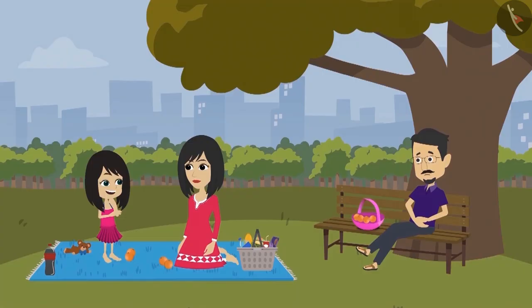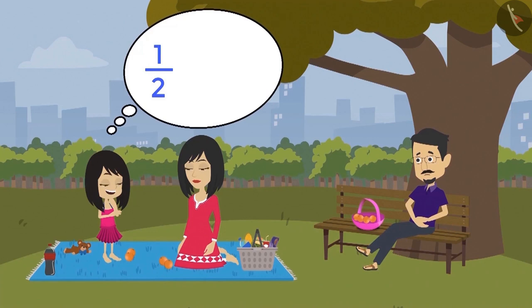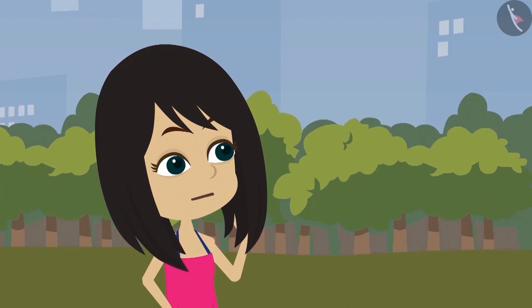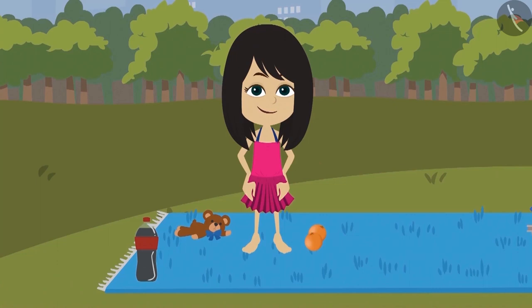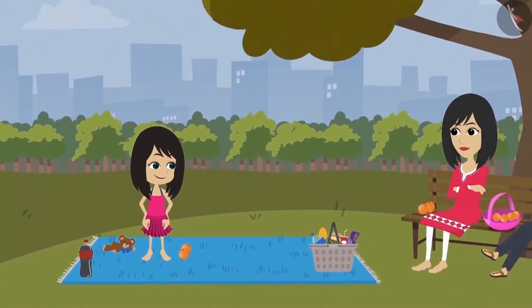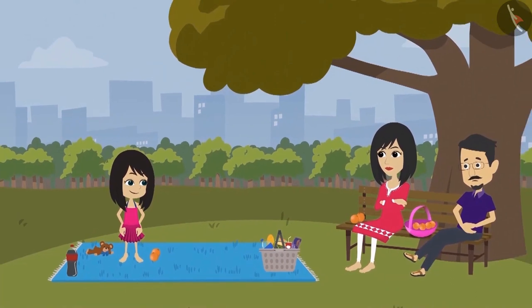Neha figured out how many oranges would come after adding half oranges and quarter oranges. But if she has to tell how much of the total oranges came in the share of her mother and father, how will she tell? Can you help Neha find out how much of the total oranges did mummy and papa get?